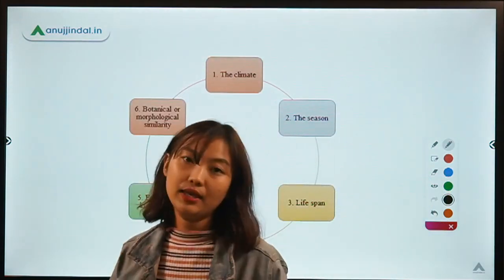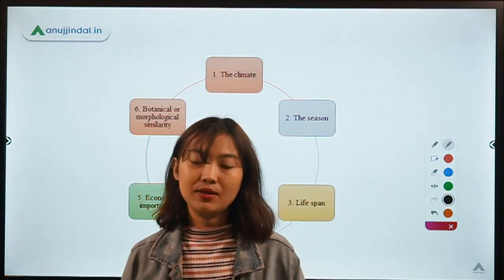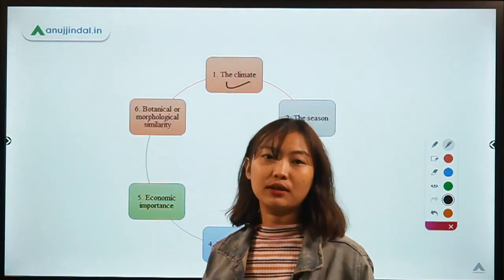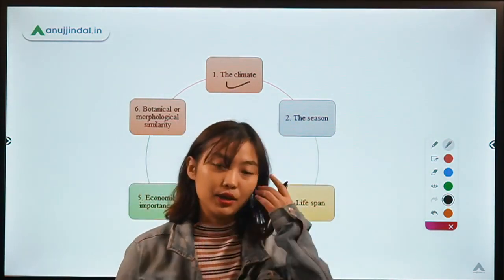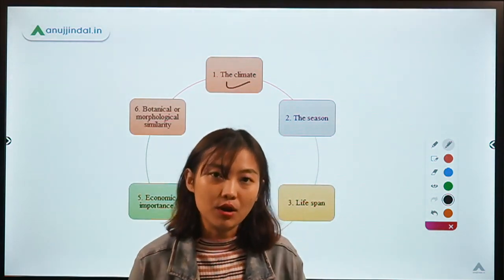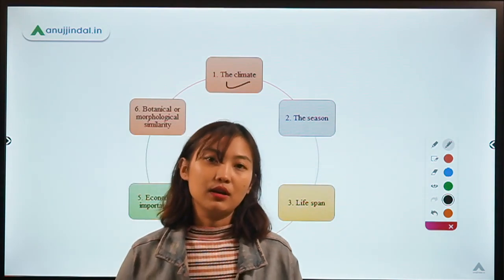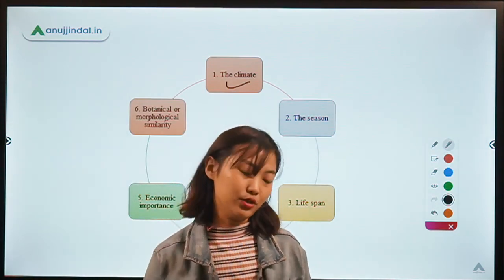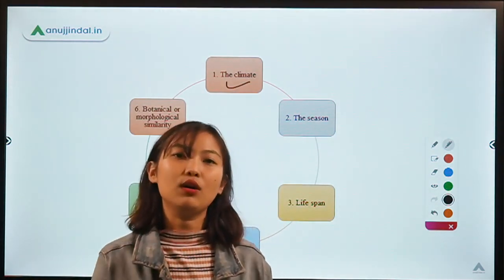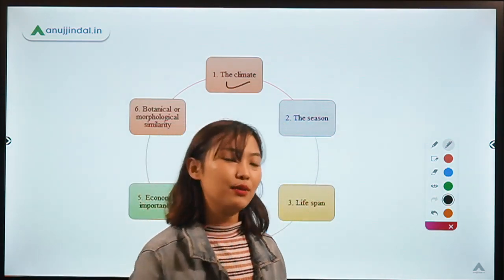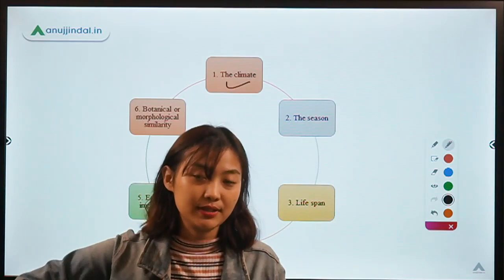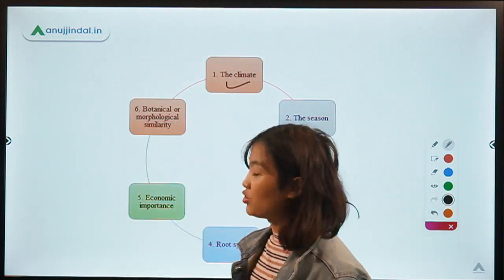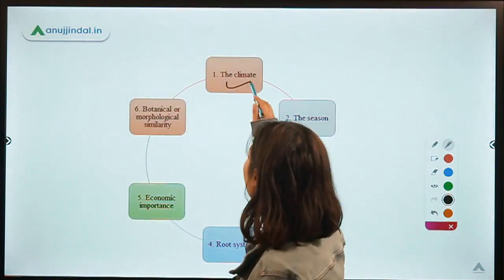Now let's talk about the classification of field crops. Field crops can be classified on the basis of: number one, climate — some crops are grown in the hotter region and some in the cooler region. For example, crops found in tropical areas like the Amazon cannot be found in the Arctic region due to temperature differences. So these field crops can be subdivided into two: tropical and temperate, on the basis of climate.